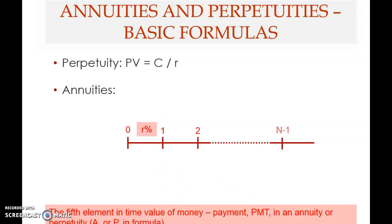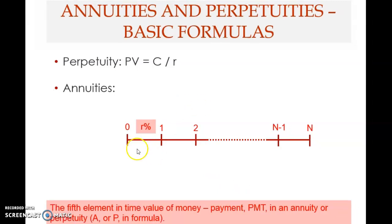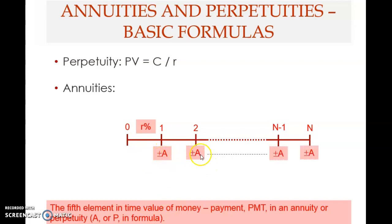Let's look at the timeline for an annuity. On the timeline we have now, one period from now, two periods from now, up to n minus one and n periods from now, with an interest rate r. For an annuity you have a fixed payment amount — symbolized as A — which can be a cash inflow or outflow, consistent throughout.